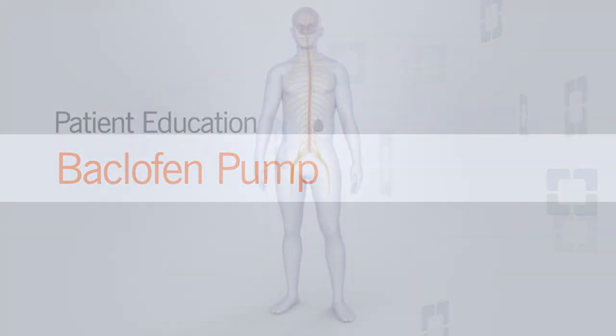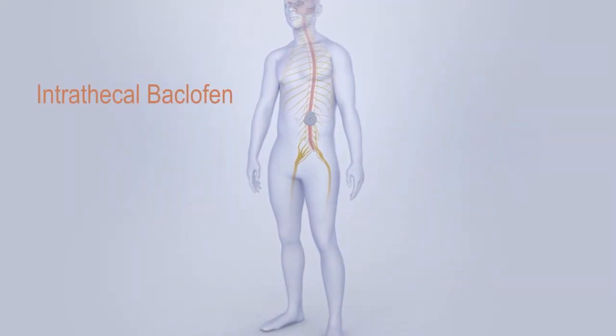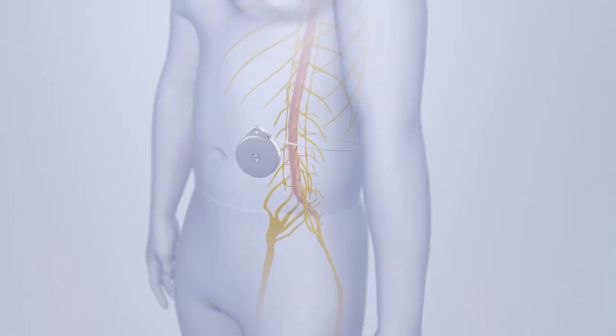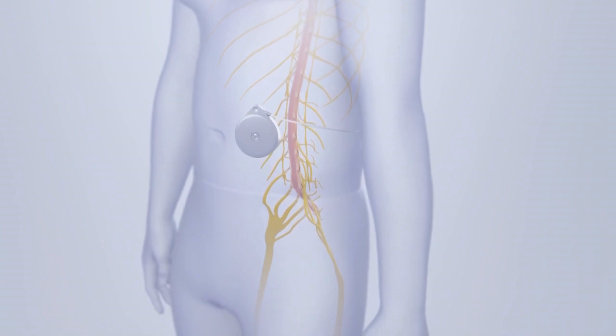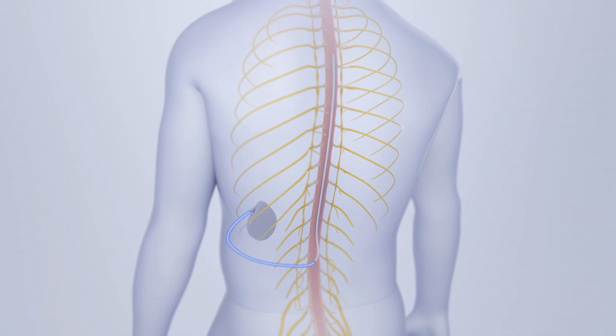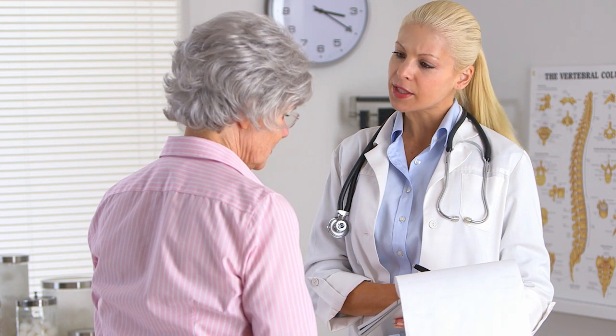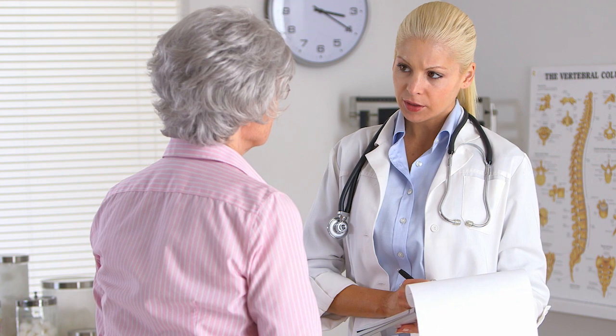A therapy known as intrathecal baclofen is used to treat severe diffuse spasticity. The medication baclofen is delivered directly into the spinal fluid by a surgically implanted programmable pump and catheter. Because the drug is delivered close to the spinal cord, much less baclofen is needed to achieve muscle relaxation, resulting in fewer side effects like drowsiness compared to oral administration. However, weakness can occur and potential complications specific to this treatment must be taken into account. For this reason, patients must undergo a screening test before the pump is placed to ensure that they can benefit from intrathecal baclofen therapy.